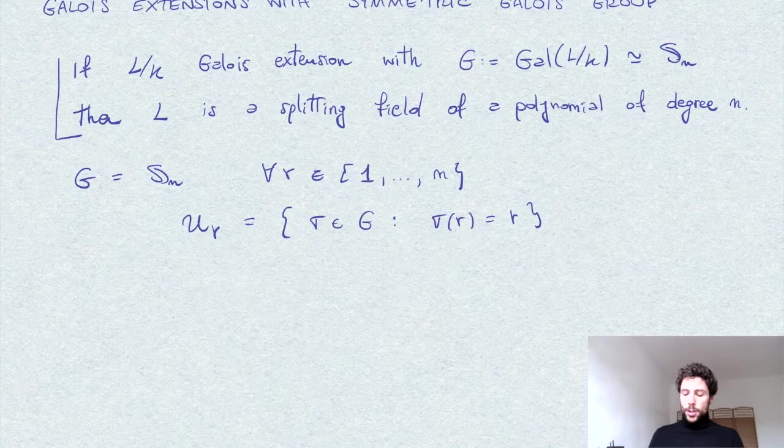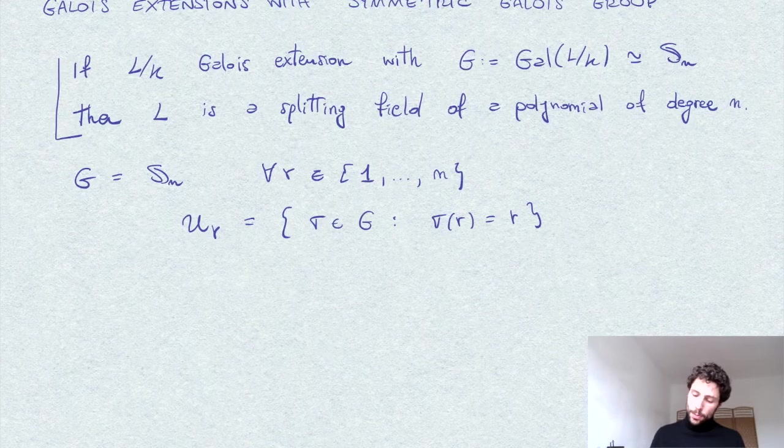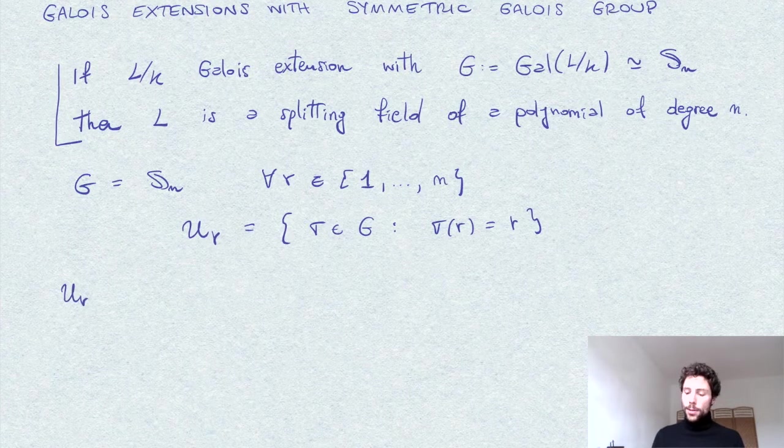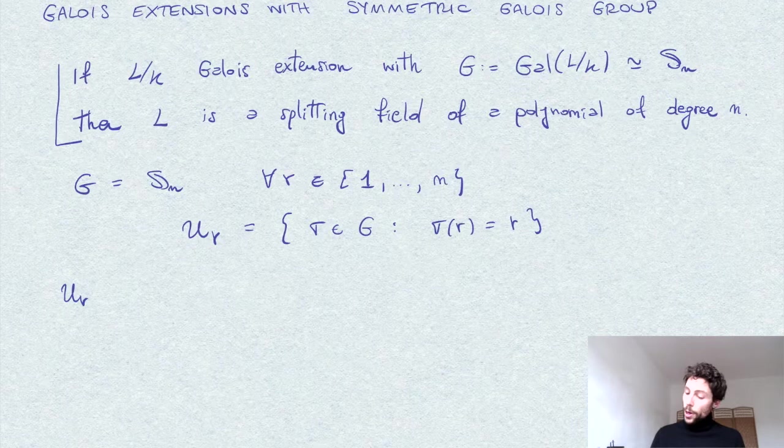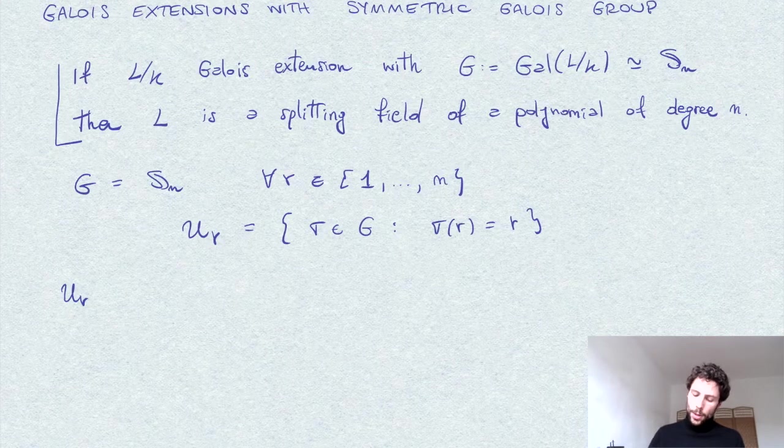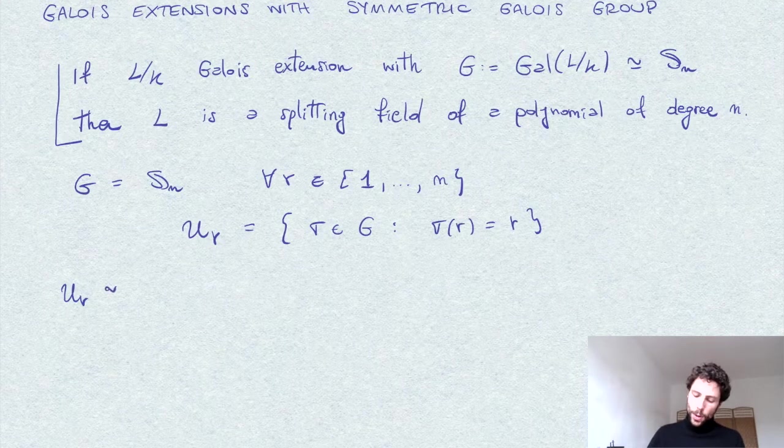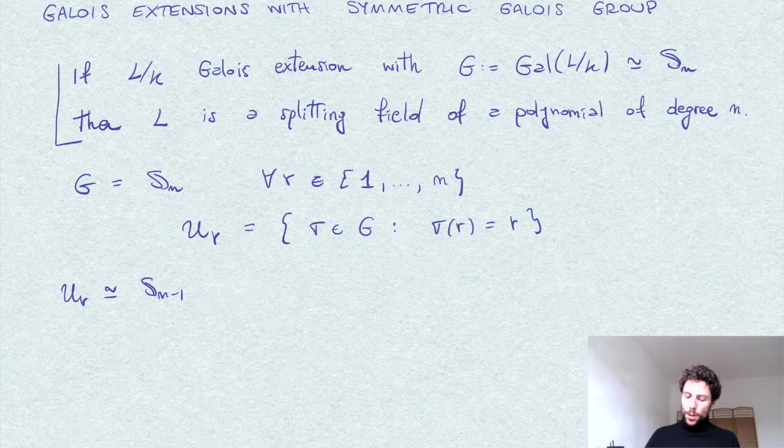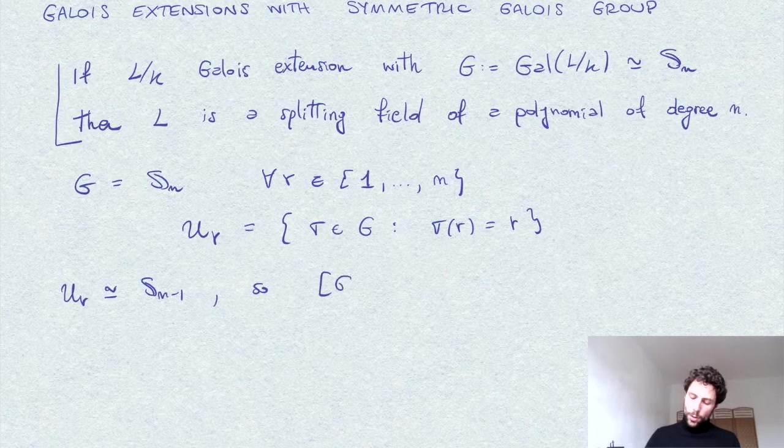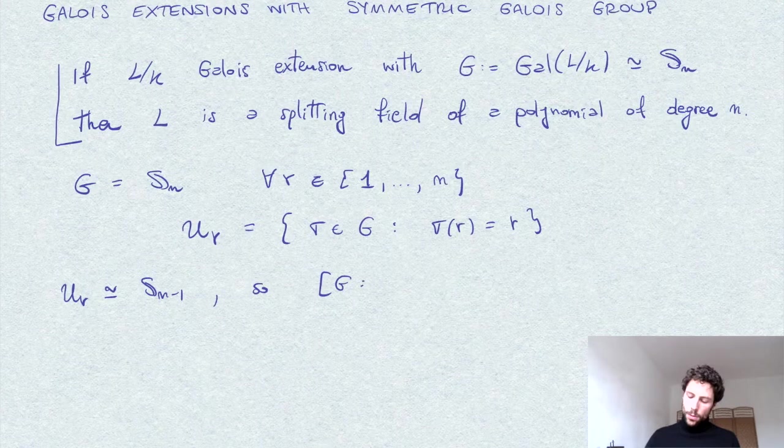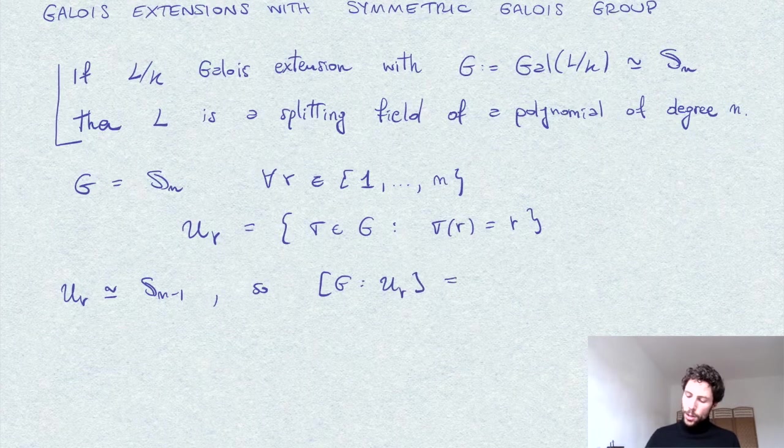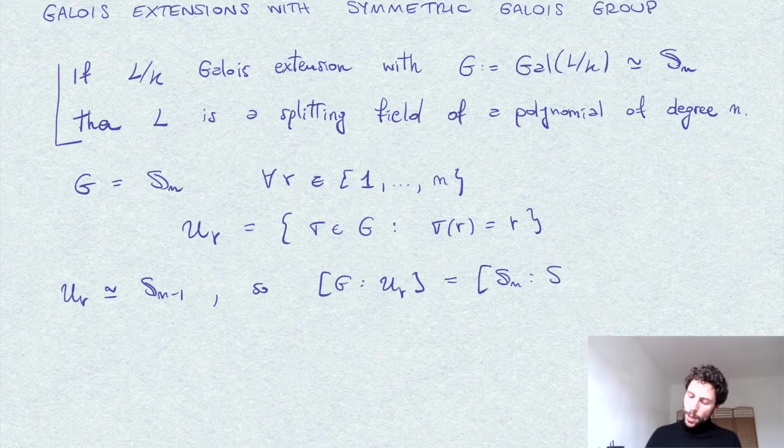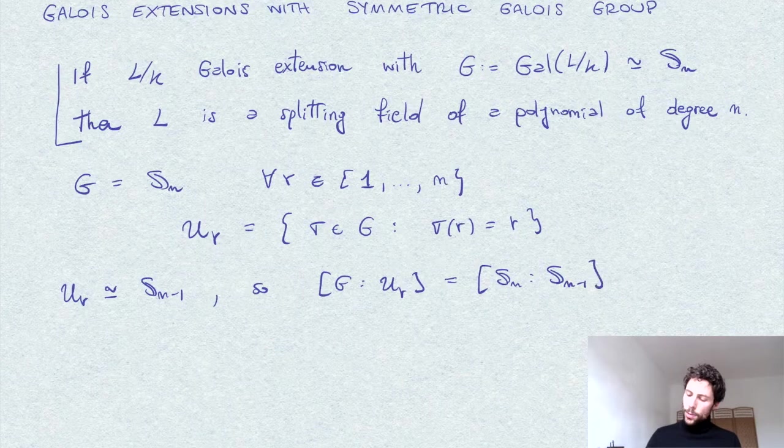So of course this is therefore a subgroup isomorphic to S_{n-1}, since we can throw away the letter R from the set and it will be precisely the permutation of n minus 1 letters. So in particular, the degree of UR in G is the degree of S_{n-1} in Sn, which is n.